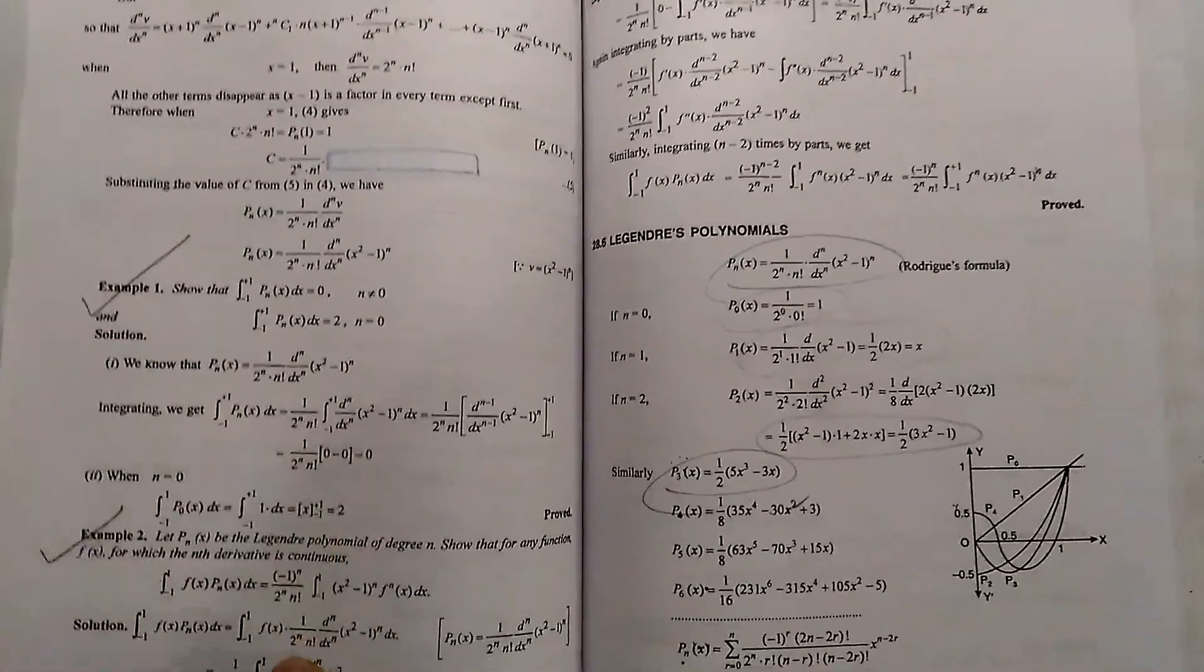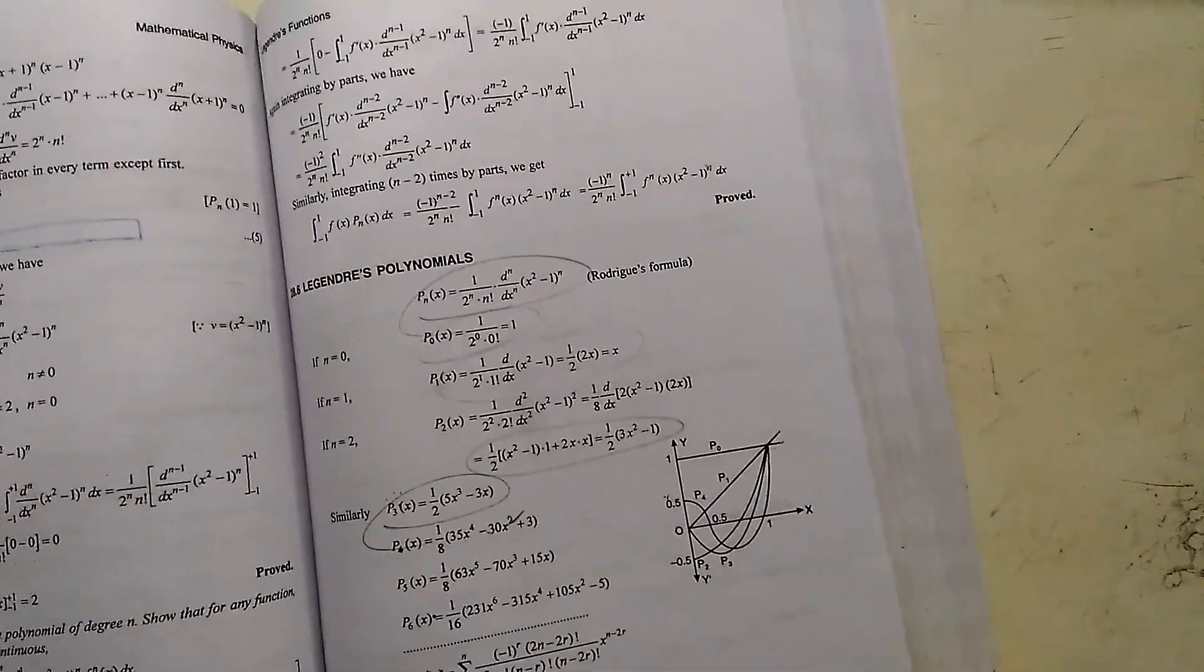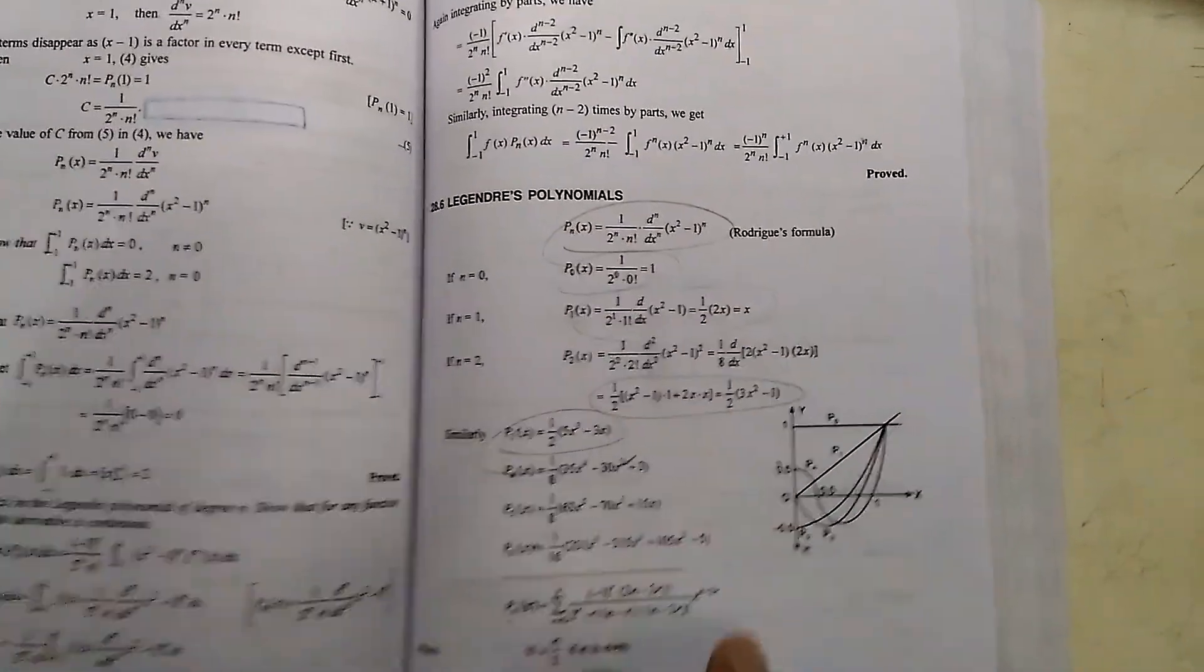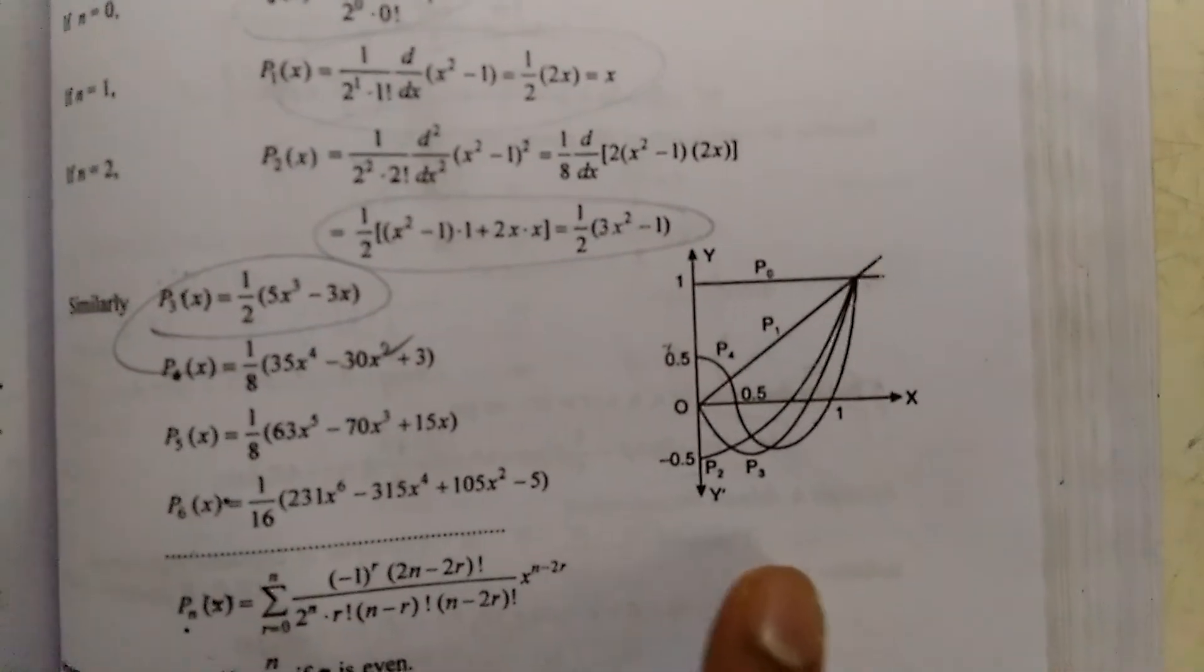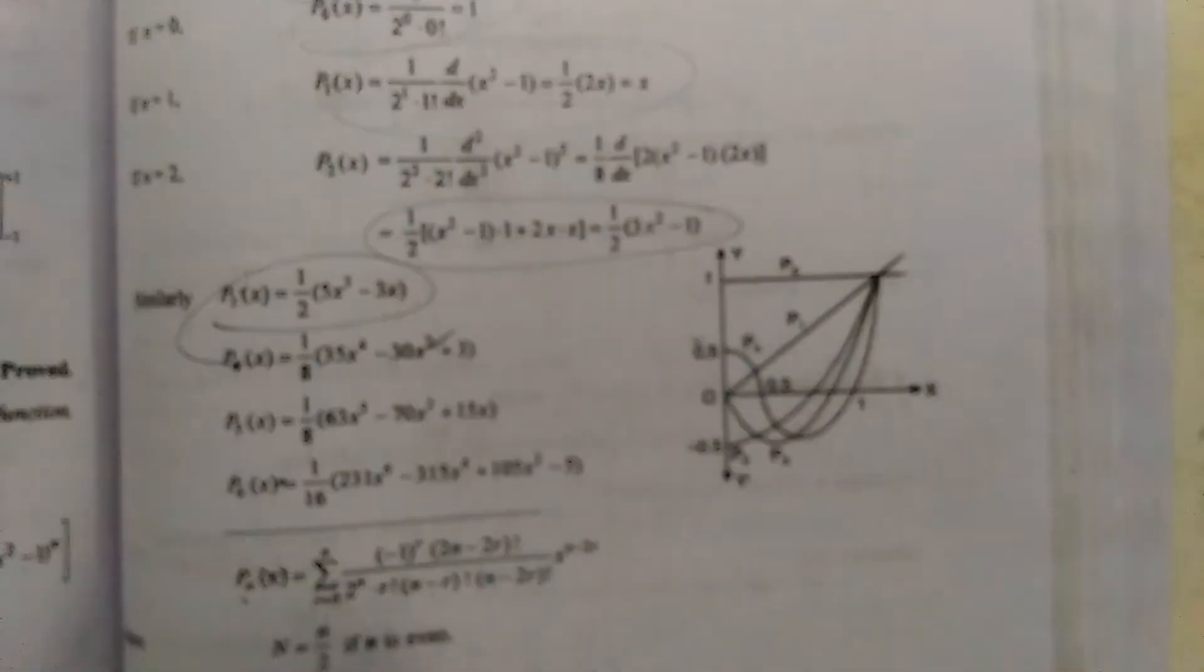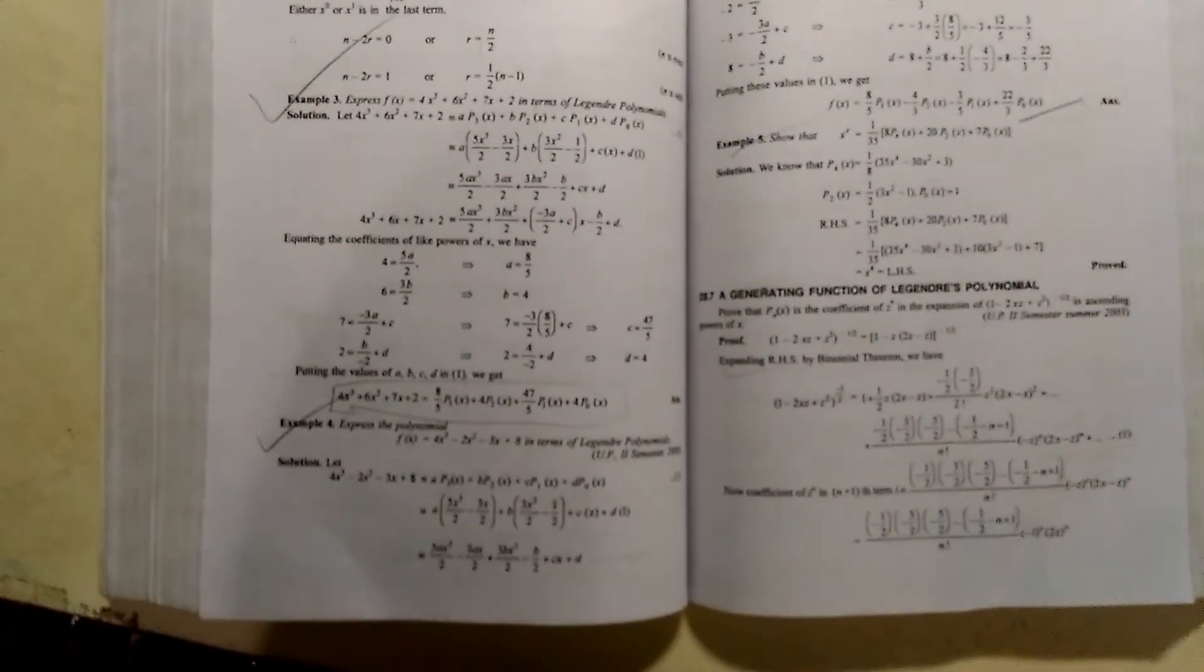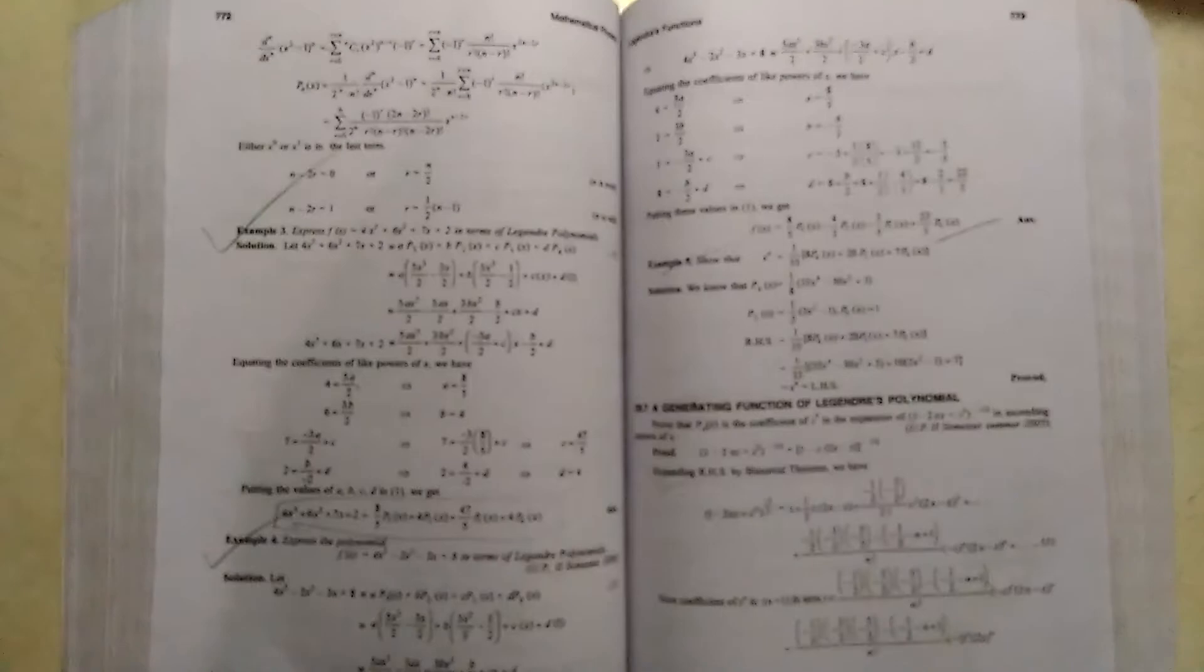And also there are problems and solutions given in this chapter as well. There are Legendre polynomial and the drawing of the polynomials. This is five to six polynomials here given which is enough for remembering, and then the examples are given.